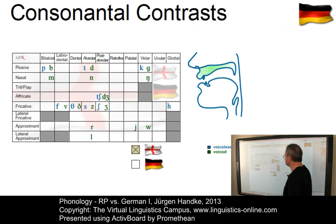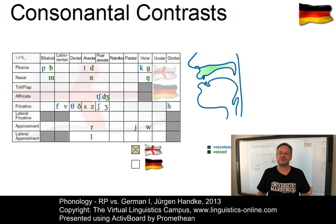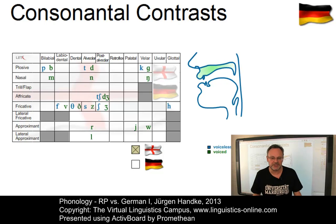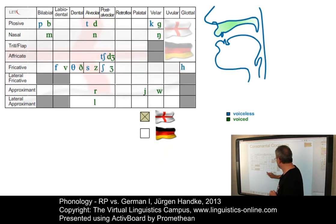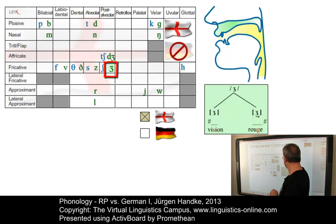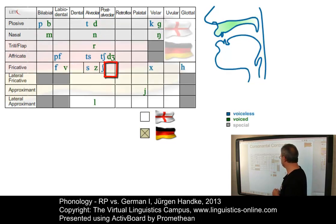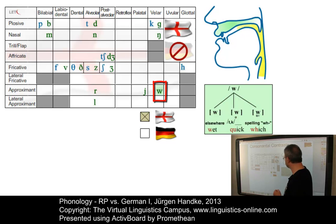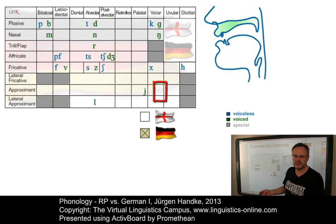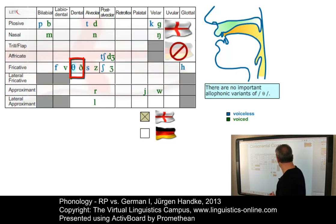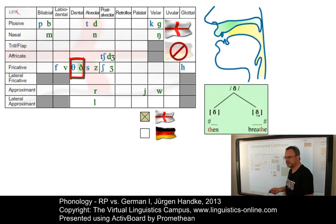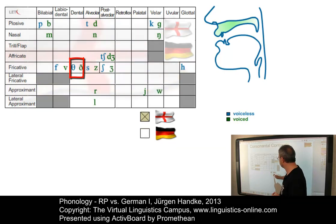Let us finally take a brief look at the consonantal contrasts. The comparison of the two consonantal systems can be done systematically using our classification of contrasts. There are a number of inventorial differences. One of them is the use of the voiced palato-alveolar fricative as in 'vision' — it simply is not used in German. Another concerns the labio-velar approximant as in 'wet', 'quick', and 'witch' — again, this position would be empty on the German consonantal chart. The dental fricatives are both problematic, so 'thin' and 'then' would be problematic for German learners — here is another gap in the German system.